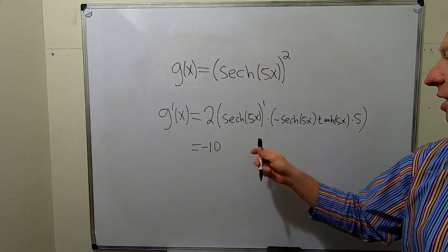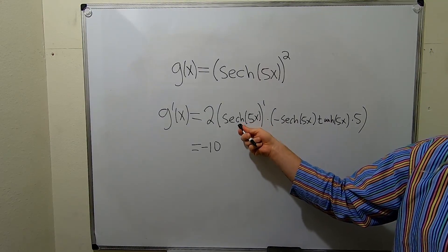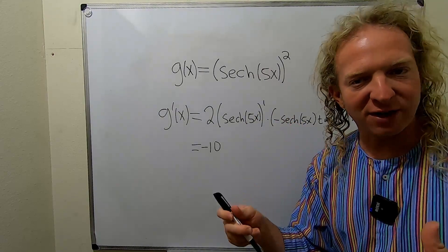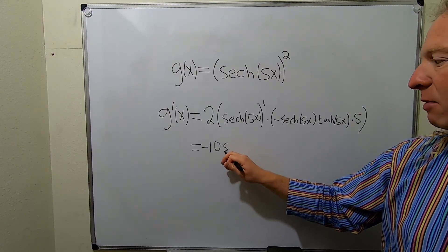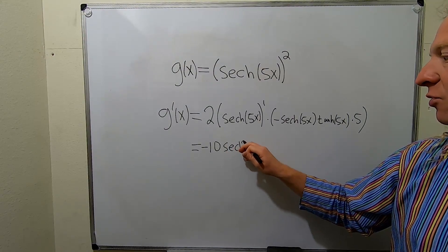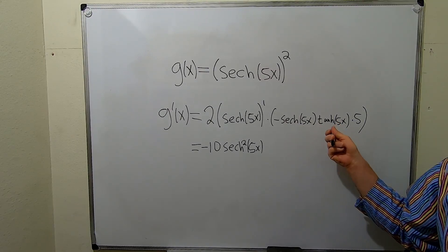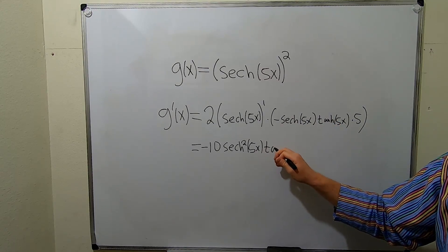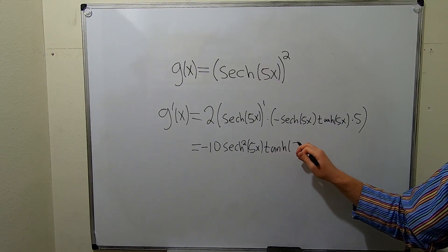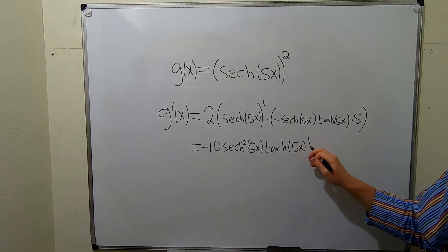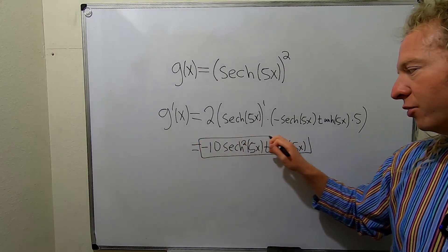I'll put that negative out front. Then we have hyperbolic secant of 5x times the hyperbolic secant of 5x. That's going to give us the hyperbolic secant squared of 5x. And then we have the hyperbolic tangent of 5x as well. And that should be the final answer to this problem.